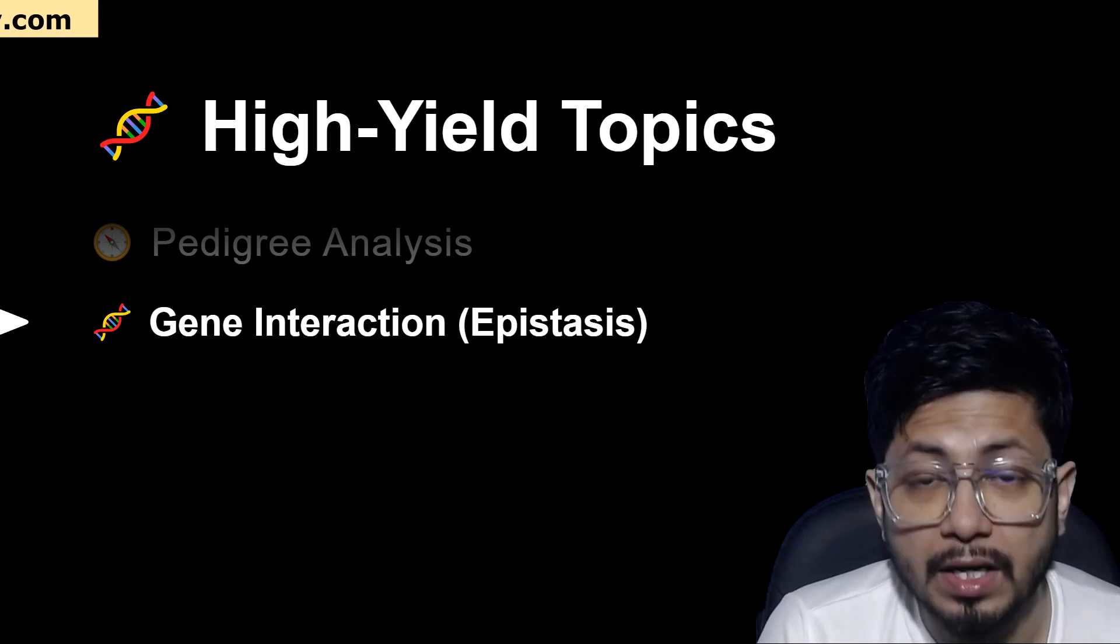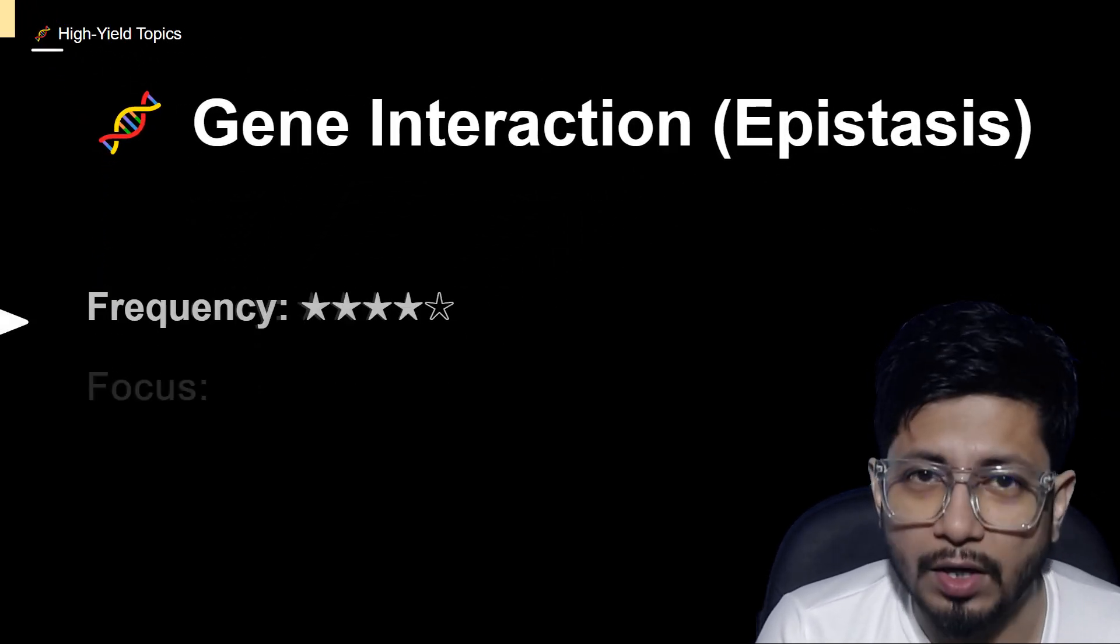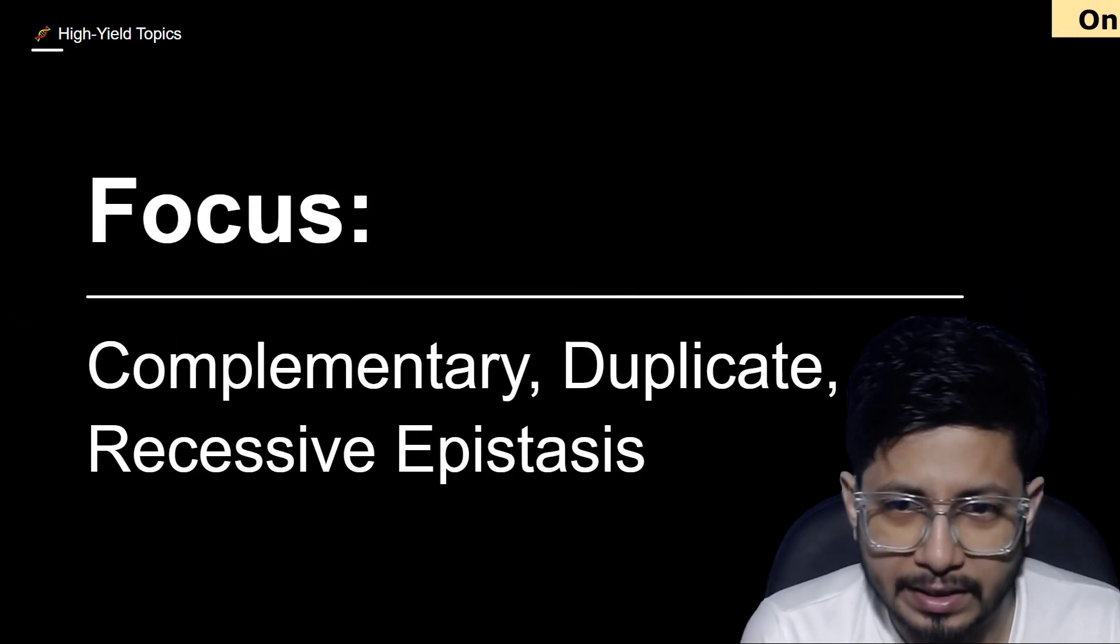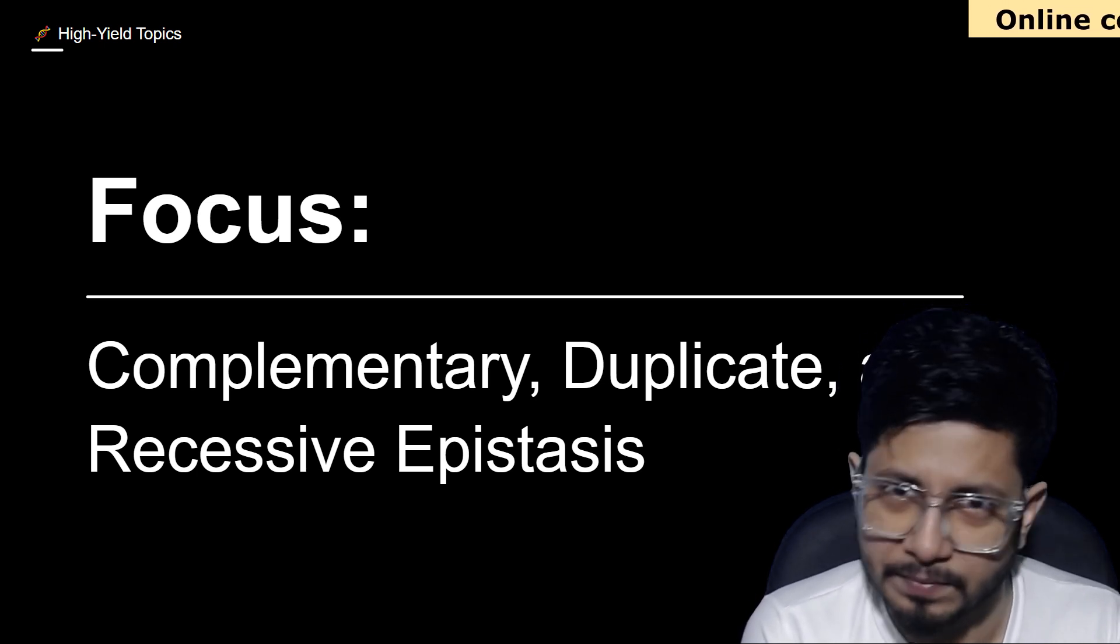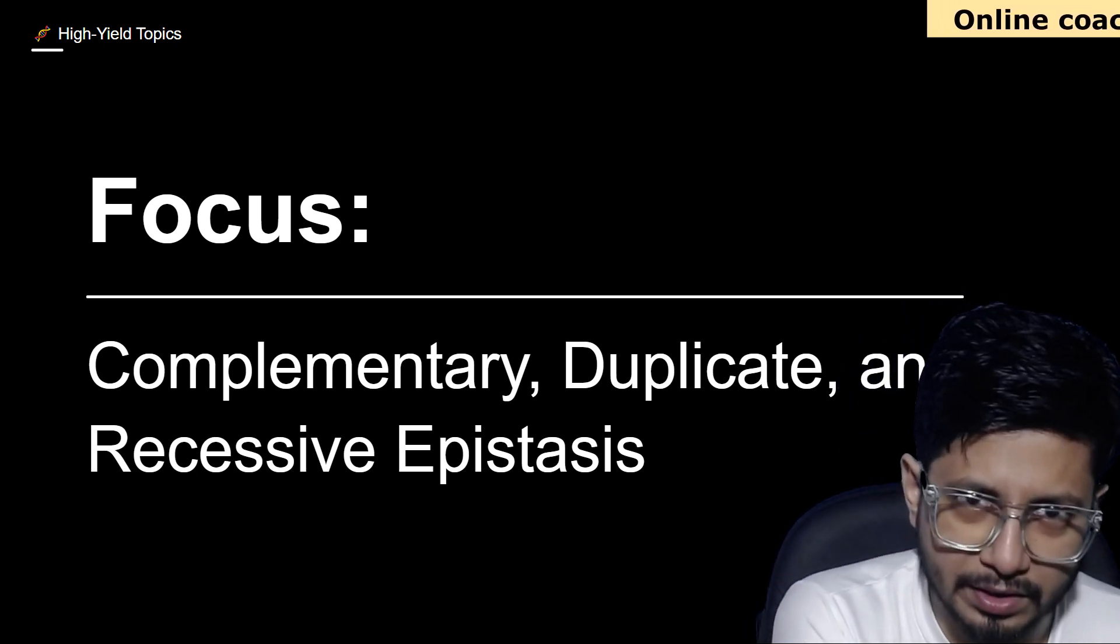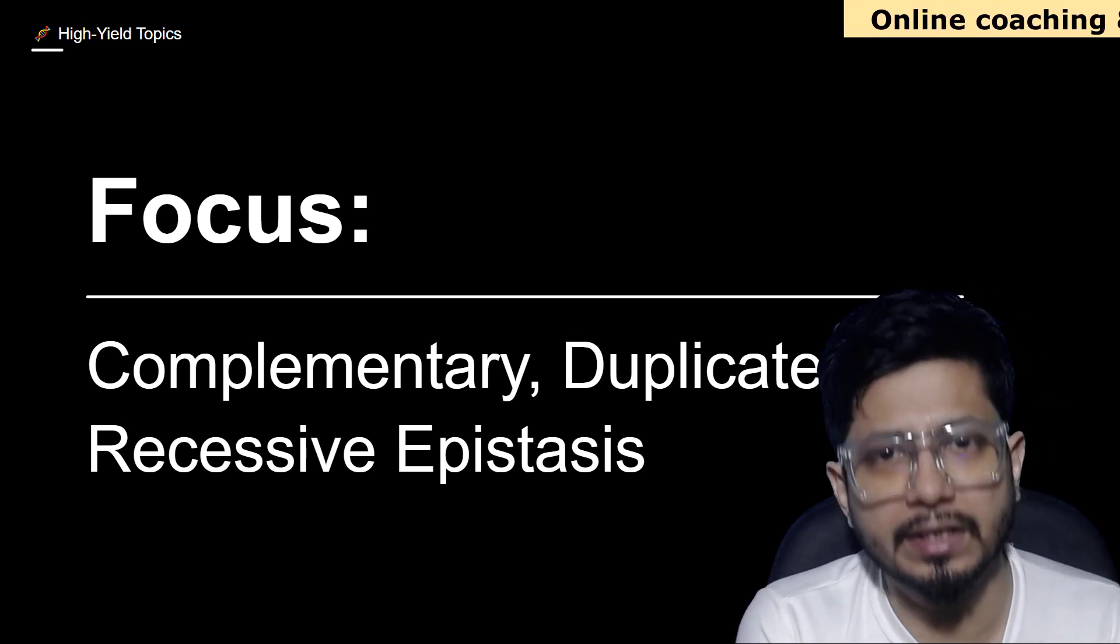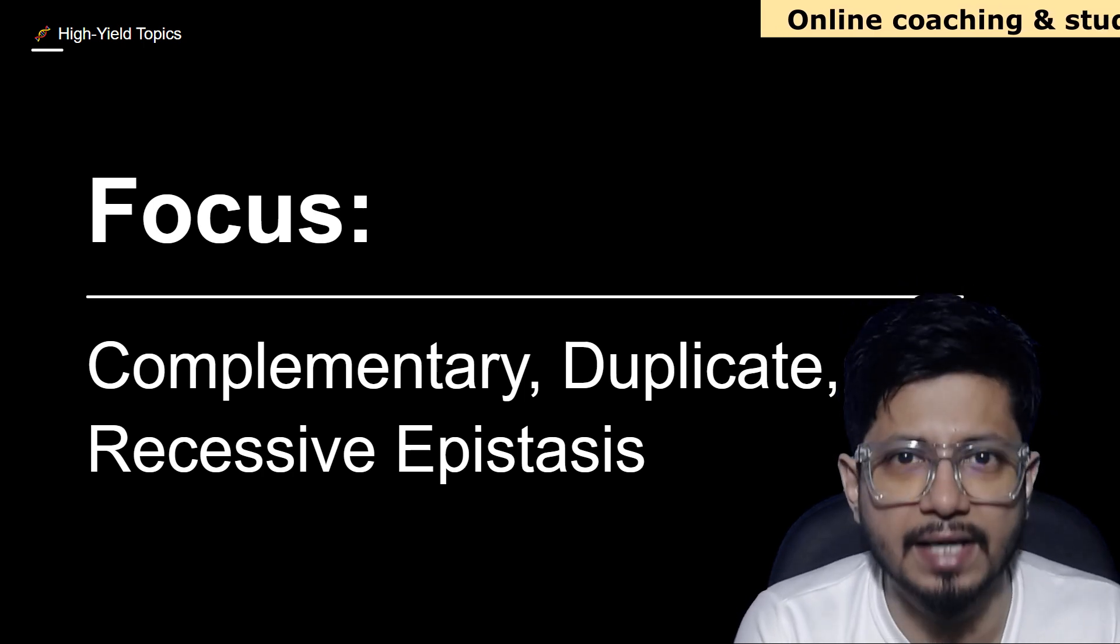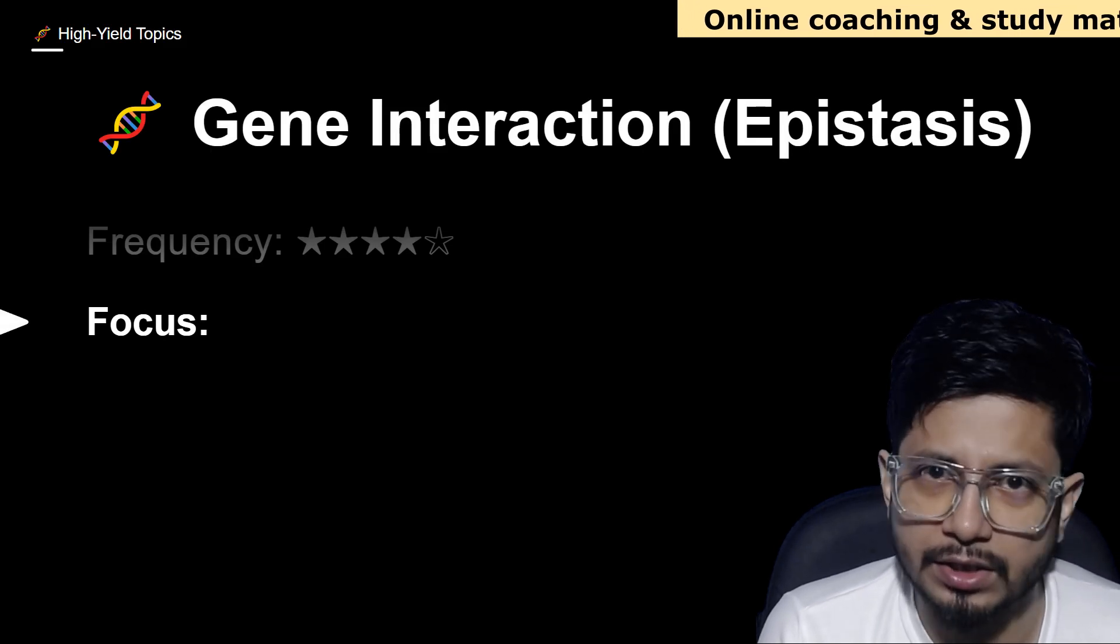Then we have gene interaction, particularly epistasis. The frequency is 4 out of 5 stars. The focus on epistasis here is complementary genes, duplicate gene production, and the types of epistasis that give rise to complementary genes and duplicate genes. Recessive epistasis, dominant epistasis, dominant-recessive epistasis, and duplicate dominant epistasis are the type of examples we need to focus on in this gene interaction study.